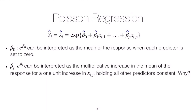Setting aside the intercept, let's think about the slope terms. If we take e raised to beta_j, we can interpret that as the multiplicative increase in the mean of the response for a one-unit increase in the corresponding predictor, holding all other predictors constant. To see why this is true, let's think about what the response would be if we add one unit to the j-th predictor, using a superscript plus-one notation.